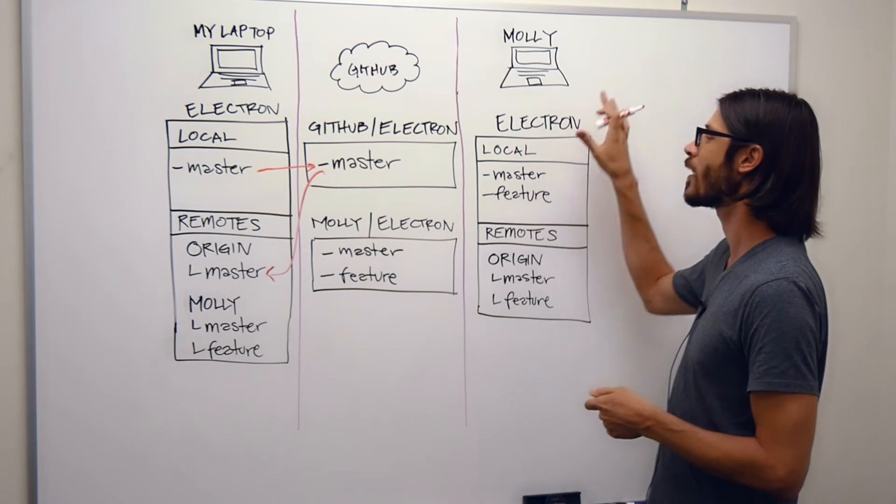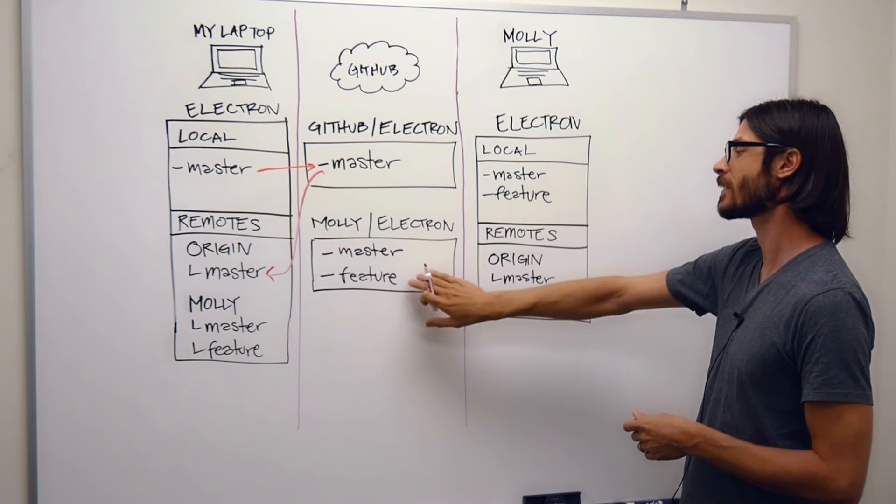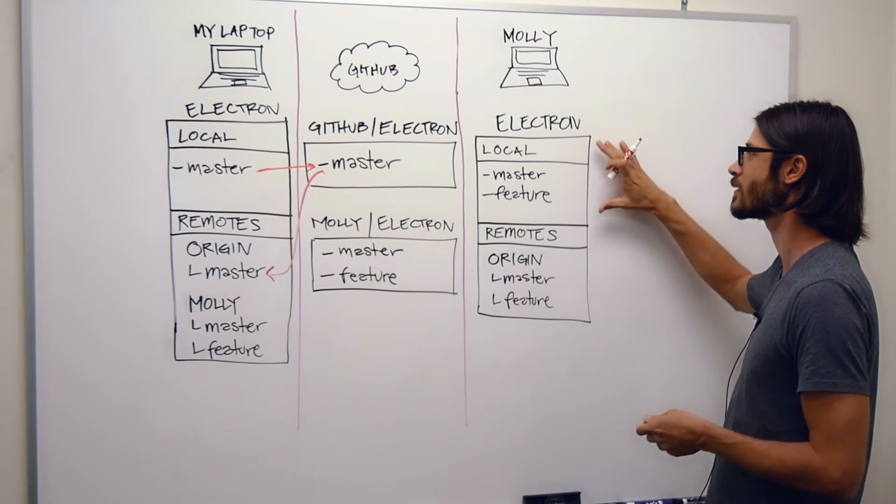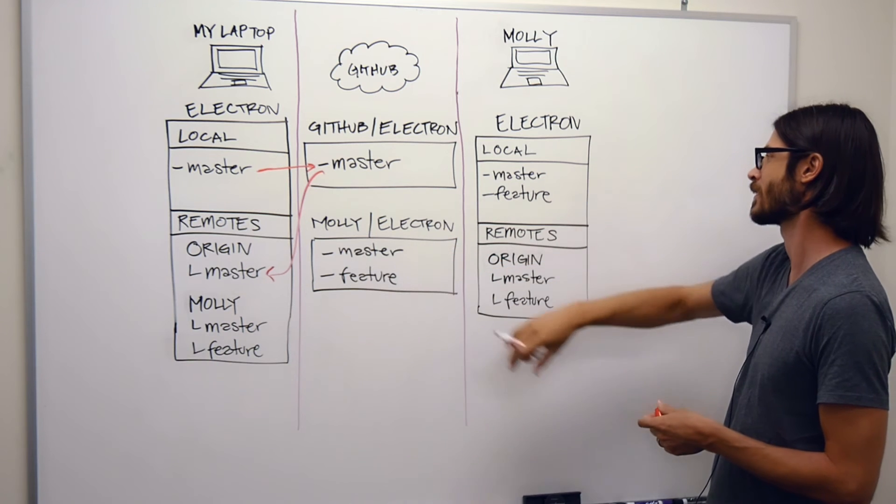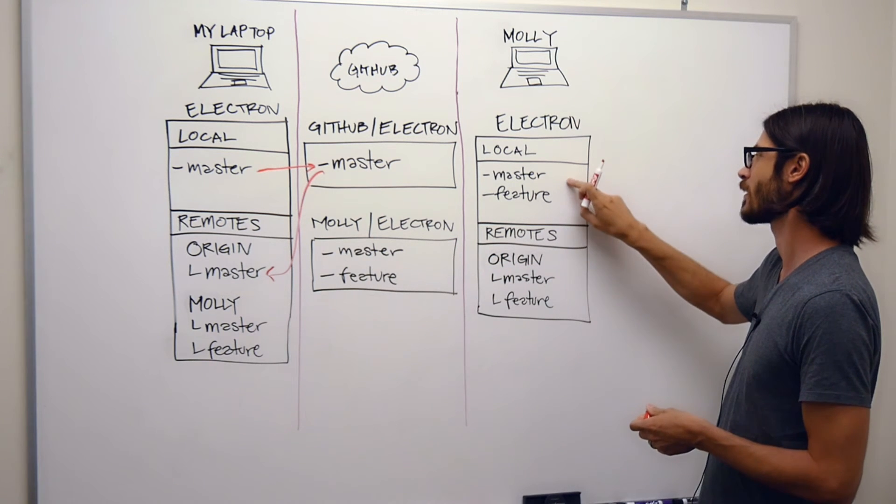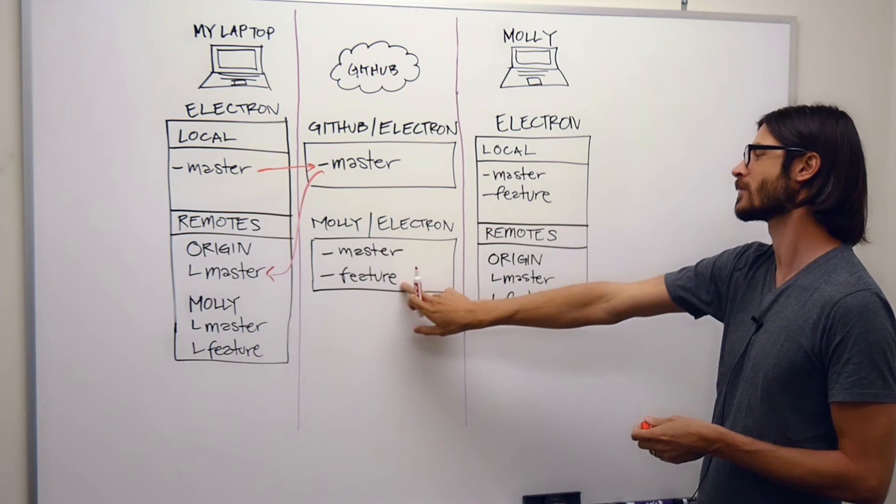In this example, Molly has created a fork of Electron, so she's working on her own thing. So she can add a feature to that. So on her machine, she has the local copy that she's cloned of her version of Electron. She's done some work on here with a feature, and she's pushed that feature up to her version right here.